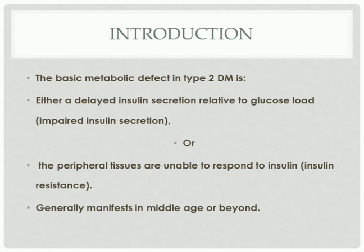Either there is a delayed insulin secretion related to glucose load. Whenever we get a glucose load, whenever we feed on carbs, then it will be compensated by the insulin secretion — it will be delayed secretion. Or the tissue in our body is unable to respond to insulin. That is called insulin resistance. Insulin receptors are not responding to the insulin, which is the major cause of type 2 diabetes mellitus.